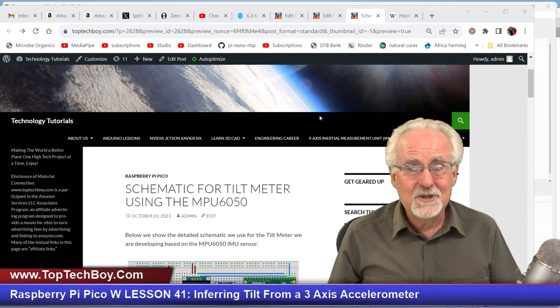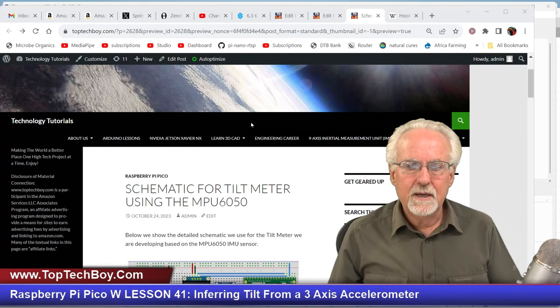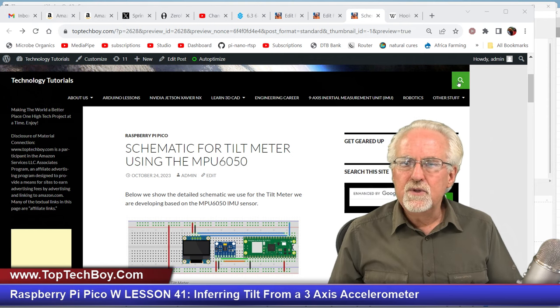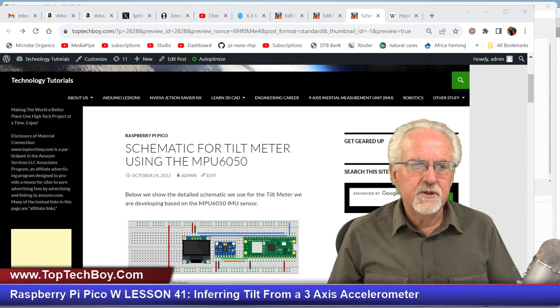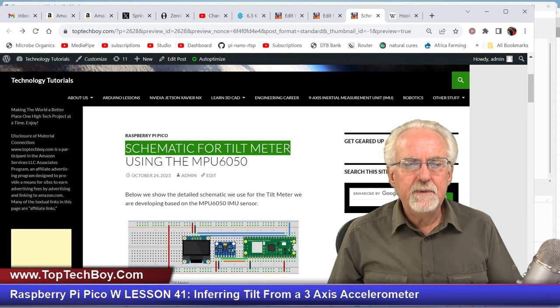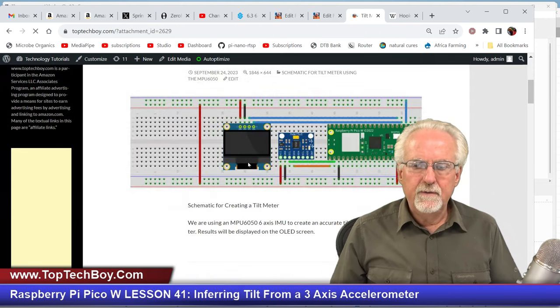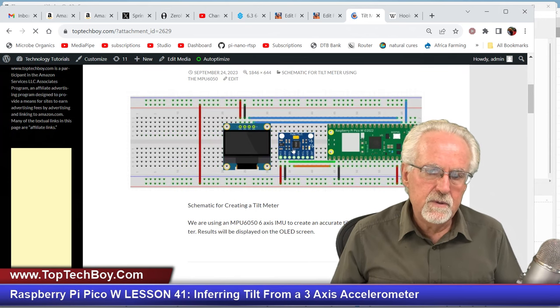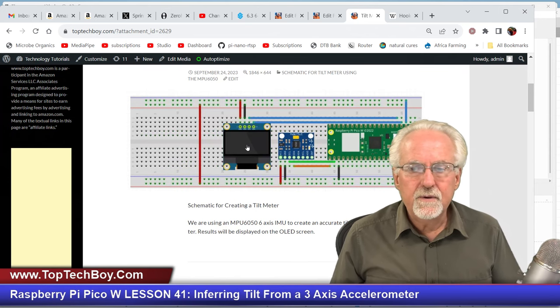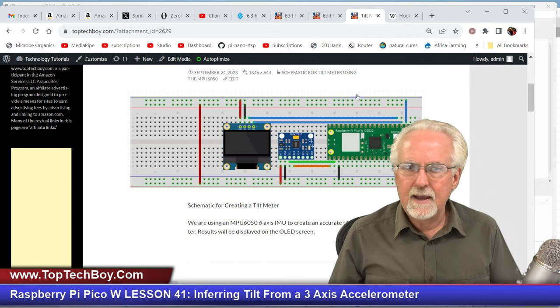You can use this search icon to search on something like 'schematic for tilt meter.' If you click on this you'll get a close-up showing how we hooked up the MPU 6050 and the 1306 to the Raspberry Pi Pico W.